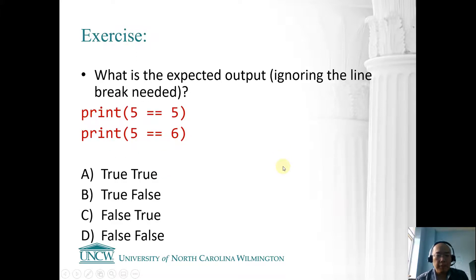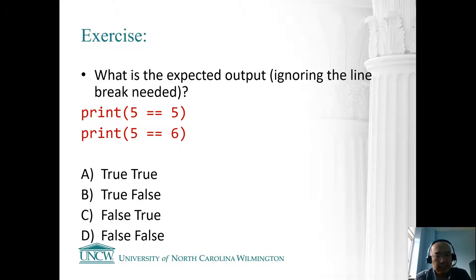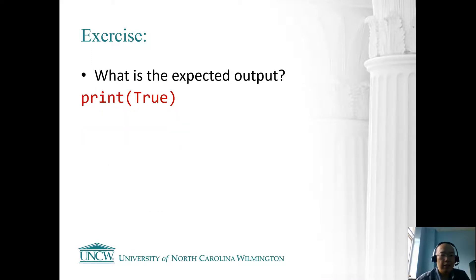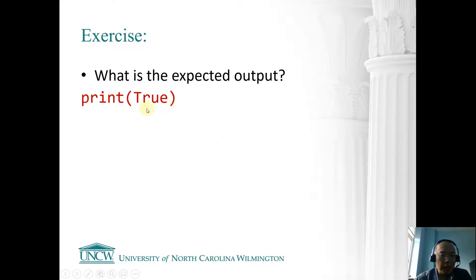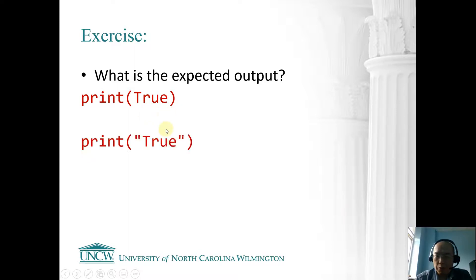Here are some quick exercises. If you print 5 equals equals 5 and 5 equals equals 6, what values do you get? Pretty straightforward — 5 equals 5 is true and 5 equals equals 6 is false. So: true and false. Next: what is the expected output of print True? True. This True is a boolean data type. I'm printing a boolean, so I get true.